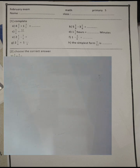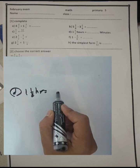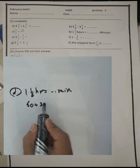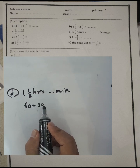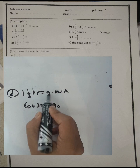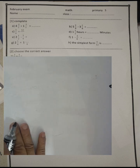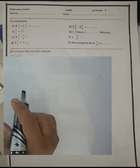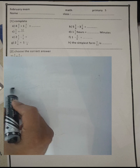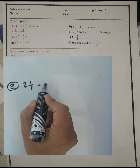Letter D: one and a half hours equals how many minutes? We know one hour equals sixty minutes and a half hour equals thirty minutes. The sum of them, 60 plus 30, will be 90 minutes.